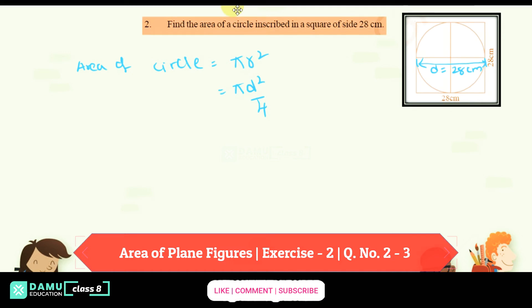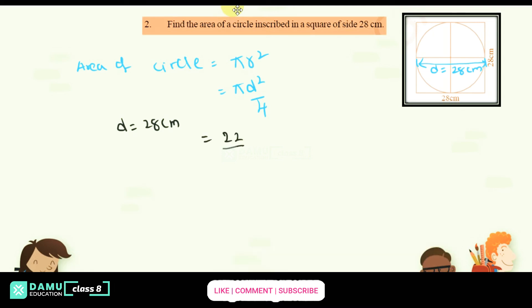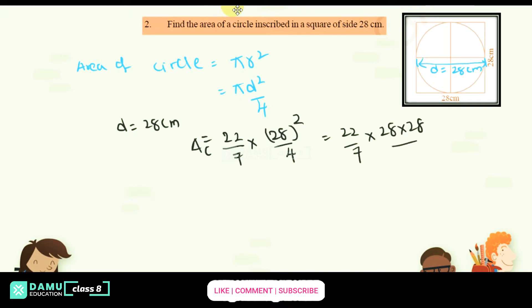The diameter is equal to 28 cm. So the area of the circle is 22 by 7 into 28 whole squared by 4, which gives us 22 by 7 into 28 into 28 by 4.